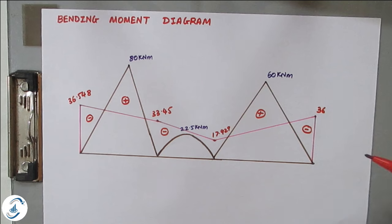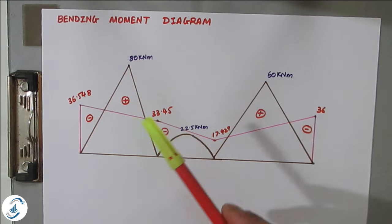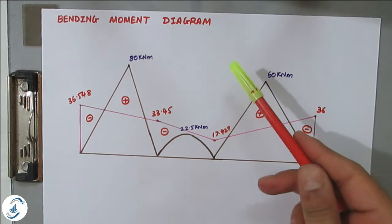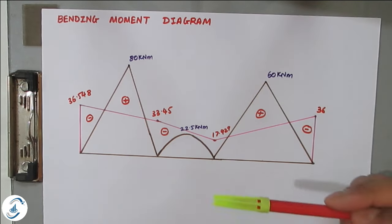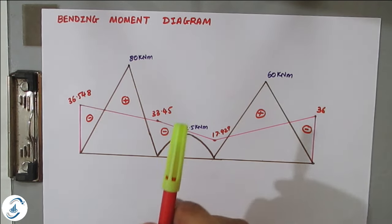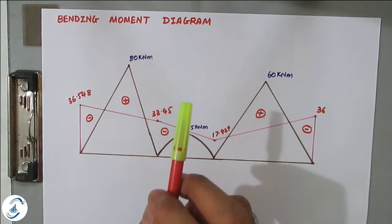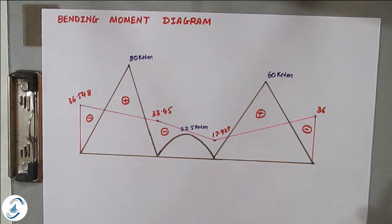This was a four-step problem: Step 1 — find fixed end moments; Step 2 — find distribution factors; Step 3 — moment distribution table to find final moments; Step 4 — draw the bending moment diagram. Using this four-step Moment Distribution Method, we can solve and find the final moments for any indeterminate beam. If you liked and understood the video, please like, share, and subscribe to All About Structural Analysis and Design, and press the bell icon for latest notifications. Thank you, friends.